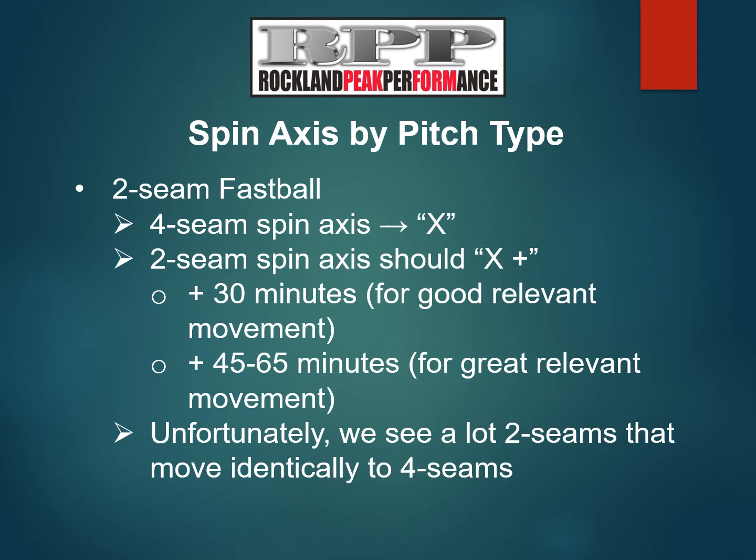For the two-seam: if your four-seam has a spin axis of X, we suggest your two-seam move further along the spin axis clock by as much as another 30 to 65 minutes. For example, if your four-seam is at 40 minutes, then your two-seam should be in the 1:10 to 1:45 range. That range would represent from good to great separation. Unfortunately, we see too many pitchers with two-seams that move very similarly to their four-seam. It looks like most pitchers have never really learned how to throw a two-seam, but that's a big opportunity for pitch development.